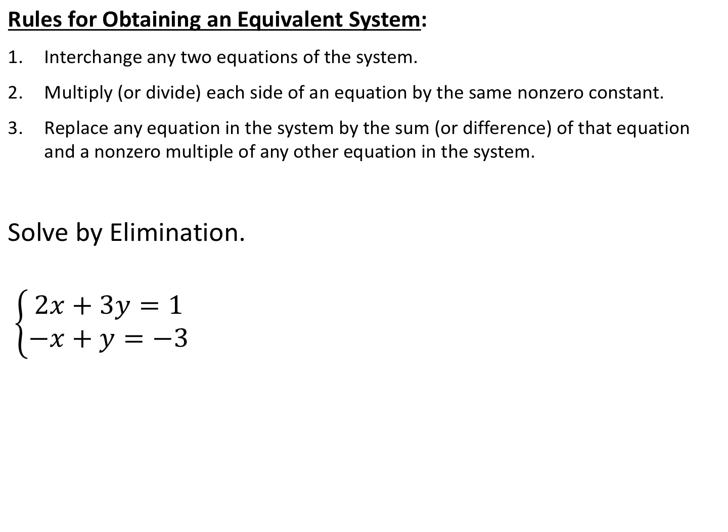Basically, you can multiply one equation by something and add it to the other equation, creating a new equation still part of your system. Your goal when solving with elimination is to get one pair of coefficients to be opposites of each other — get either the x's or the y's to be opposites — then add the two equations together to eliminate one variable. Solve for the remaining variable and then plug that back in.